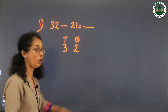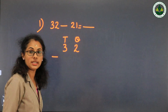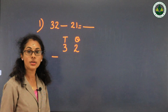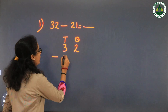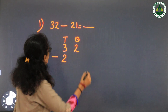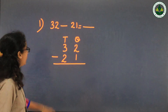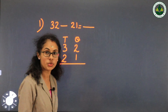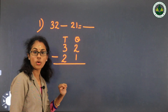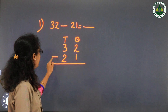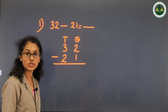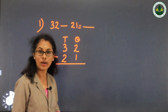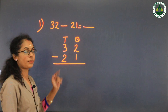Then minus 21. How many tens and ones in 21? 2 tens and 1 one. Write 2 in the tens column and 1 in the ones column. Then subtraction starts.